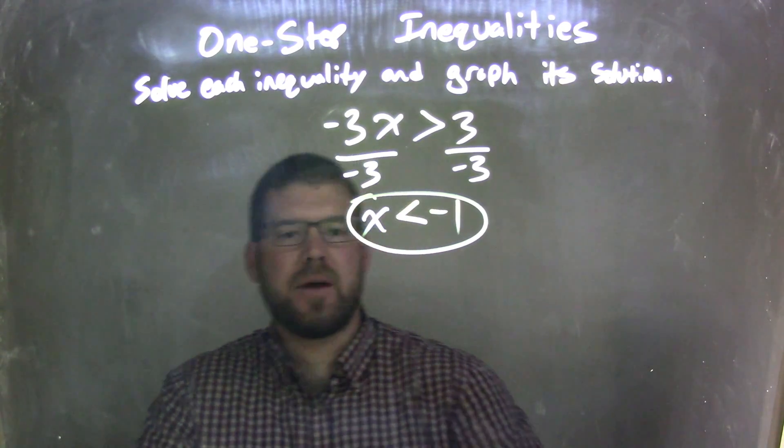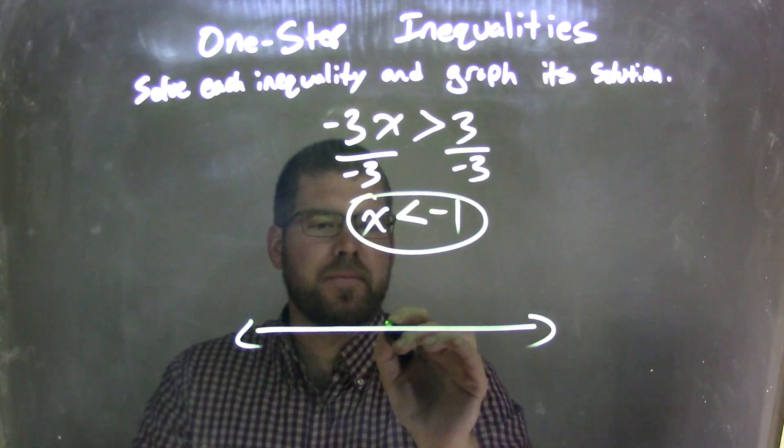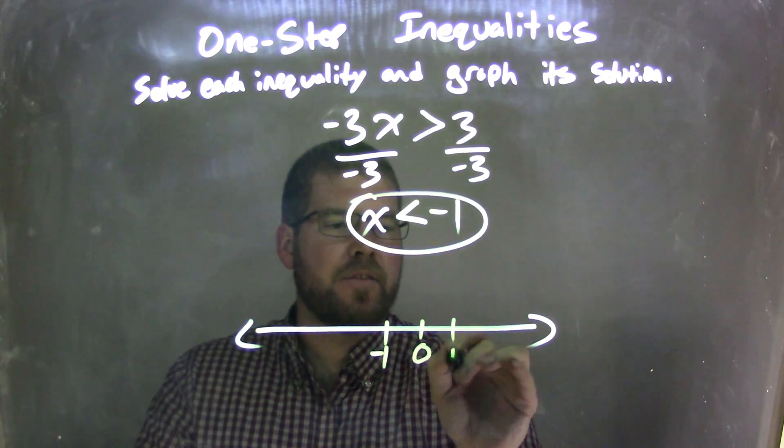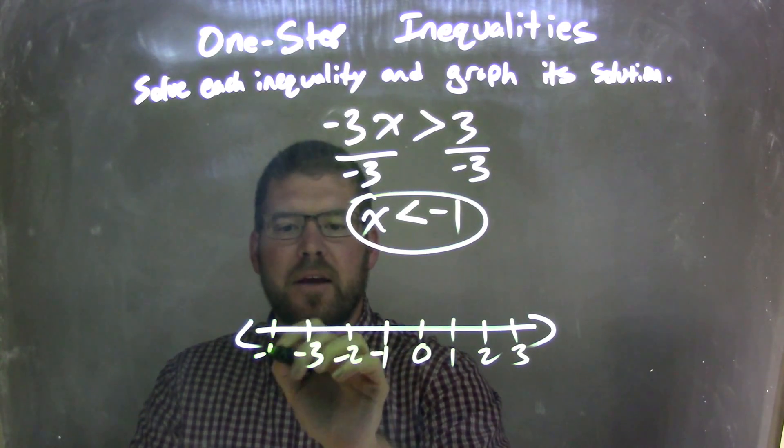But now I need to graph that. So we graph that, we have a negative 1 here. There's 0, positive 1, 2, 3, and negative 2, negative 3, and negative 4.